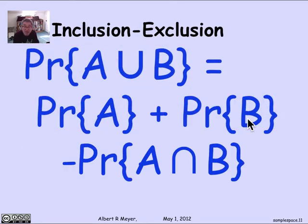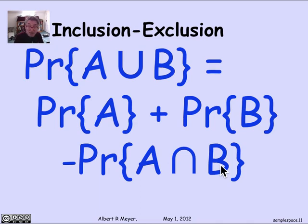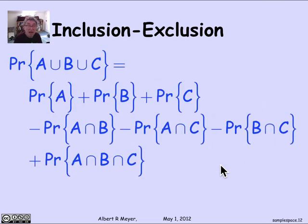Similarly, we have inclusion-exclusion. If A and B are not disjoint, then the probability of A union B equals the probability of A plus the probability of B minus the probability of the intersection. The proof is exactly like the corresponding rule for cardinalities of finite sets. And of course, it generalizes to more sets — here is inclusion-exclusion for three sets expressed in terms of probability.